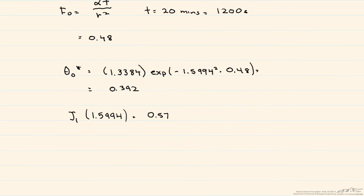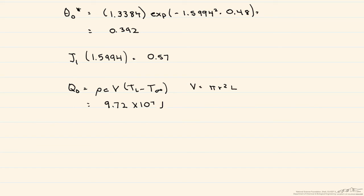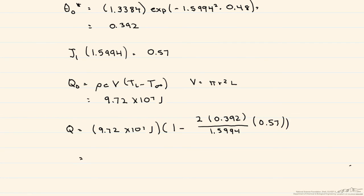We're going to calculate our Q0, which remember is the maximum possible energy transfer. Remember that volume is going to be equal to the volume of a cylinder. And so when we calculate this Q0, we end up with 9.72 times 10 to the 7th joules. And finally, Q is equal to that 9.72 times 10 to the 7th joules. And our final answer is equal to 7 times 10 to the 7th joules.